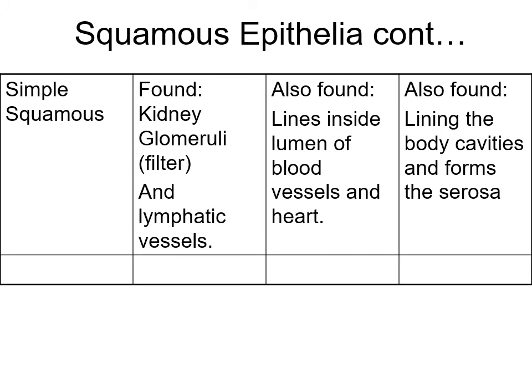Simple squamous epithelium is commonly found in all your blood vessels and lymph vessels, and in the kidney the glomerulus is surrounded by simple squamous epithelial cells. It lines the lumen of all blood vessels and the inside of the heart. It also forms the serosa - a membrane surrounding body cavities such as the abdominal-pelvic, thoracic, pleural, and pericardial cavities - and the visceral membrane on top of all organs.